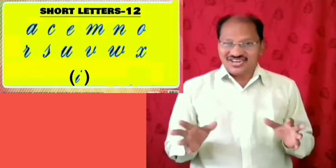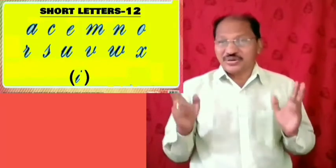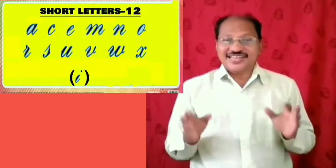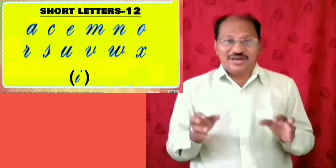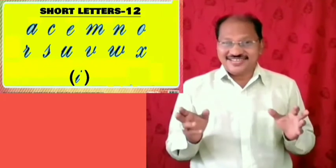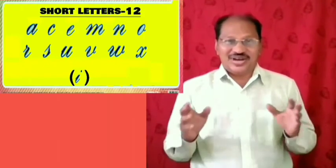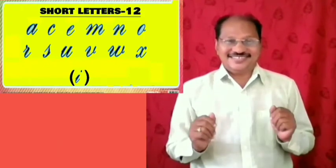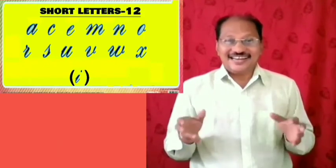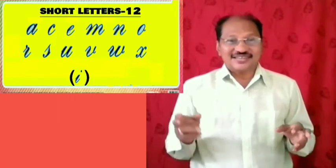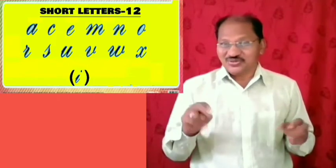There are 12 short letters in group number 2. They are A, C, E, M, N, O, R, S, U, V, W, and X. The letter I falls under both groups.